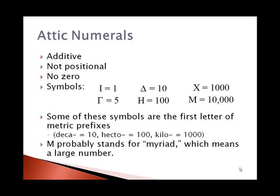The Attic numerals were an additive system, just like the Babylonian system, the Egyptian system, and the Roman numerals that we've looked at. But it was not positional, like the Egyptian system, the order of the symbols did not matter. And like the other systems we've seen, there was no zero.